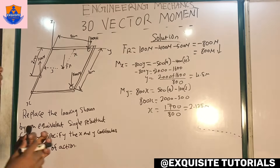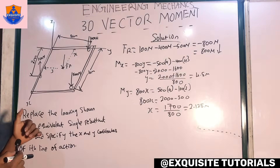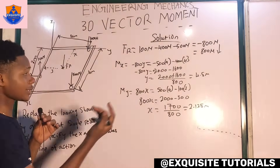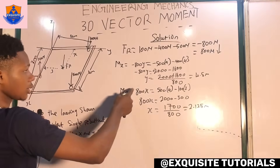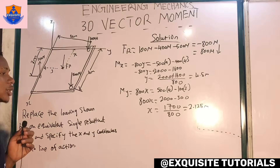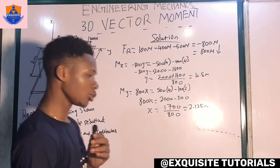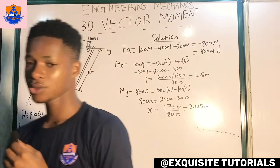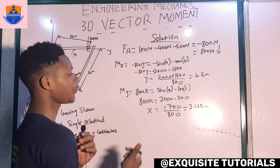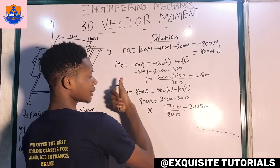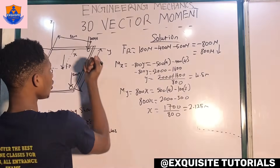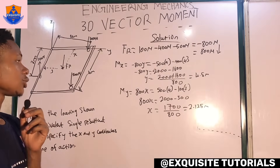So we can see how the right-hand rule is applied to solve this type of question. Even though the question doesn't mention moments explicitly, we know we have to apply knowledge of moments to solve it. The resultant force goes directly into the plane, the distance to the x-axis (y) is 4.5 meters, and the distance to the y-axis (x) is 2.125 meters. That is how we solve problems on 3D moments.